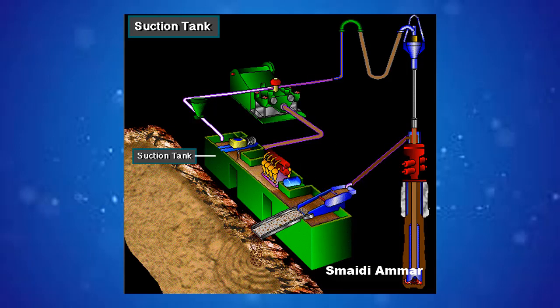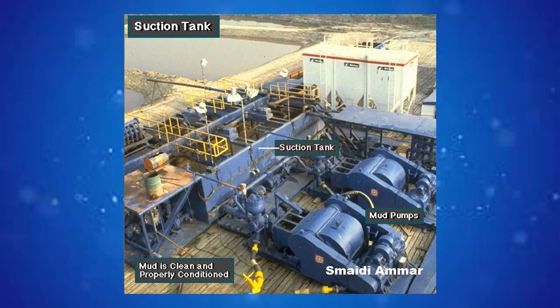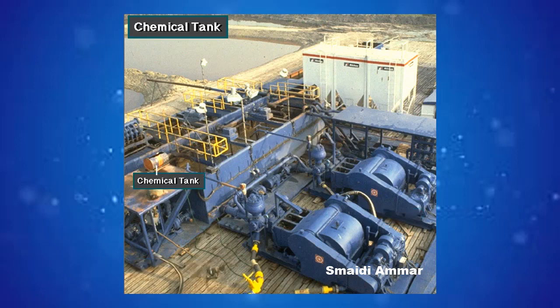The suction tank is where the mud pump picks up mud ready to circulate downhole. Mud in the suction tank should be clean, free of solids and gas, and properly formulated or conditioned. Crew members use the chemical tank to mix special chemicals, such as caustic, that they will put into the active mud tanks.